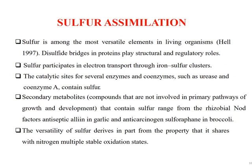Sulfur is among the most versatile elements in living organisms. Disulfide bridges in proteins play structural and regulatory roles. Sulfur participates in electron transport through iron-sulfur clusters. The catalytic sites of several enzymes and coenzymes such as urease and coenzyme A contain sulfur. Secondary metabolites containing sulfur range from rhizobial nod factors to antiseptic allicin in garlic and anti-carcinogen sulforaphane in broccoli. The versatility of sulfur derives in part from its multiple stable oxidation states, a property it shares with nitrogen.